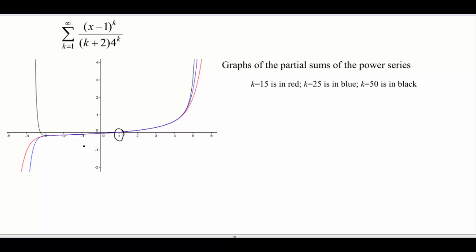So it kind of looks like things start to go apart here at negative 3 — you can't really read that number, but that's negative 3. And then maybe somewhere in the 4 to 5 range, things kind of start to shoot off too. So it gives us a good visualization of what's happening, so we can have a gut check to see if our interval of convergence is correct or not.